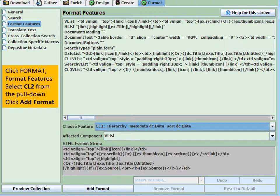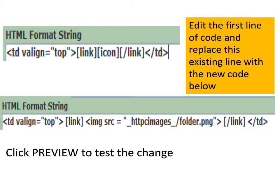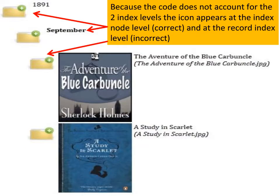The next step is to modify the format for our new DC date index, which is CL2. Go to Format, Format Features, select CL2, and click Add Format. The first thing to do is replace the first line, which uses link-icon-link. That uses the bookshelf icon at the index node level and hyperlinks it to the associated records. If we replace that using an image tag referring to the folder image in our collection's images directory, we should get a much nicer result. But when we preview it, it doesn't work well — because this is an AZ compact list type with hierarchies, the code we put in applies to both levels unless we tell it otherwise.